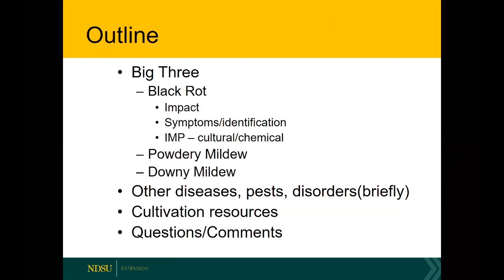I'm going to talk about the big three diseases: black rot, powdery mildew, and downy mildew. If you grow any number of grapes, you're very likely to see potentially all three of those pathogens, especially one or two of them. For each pathogen, I'll talk about the impact they can have on your grape growing, the symptoms you might see, and some tips to identify which pathogen you might be dealing with. Then I'll go over some integrated pest management, including fungicides and cultural practices to manage those diseases.